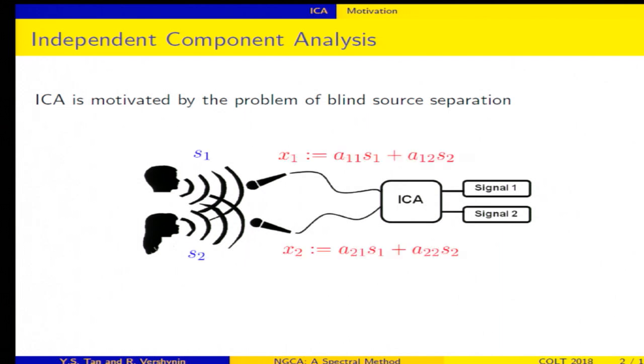So more concretely, you have two speakers, Alice and Bob, and you have two sensors, and the two people are talking at the same time, and each of the sensors receives a linear combination of the sound waves that come from the two people.